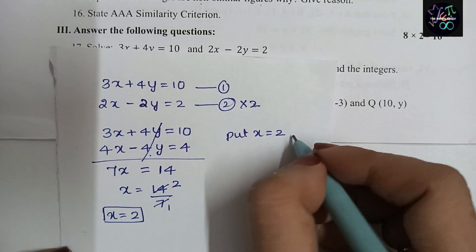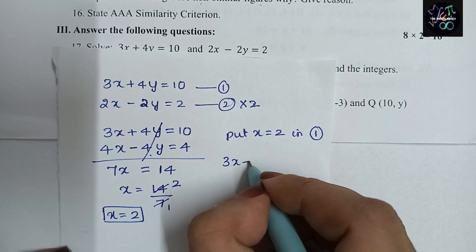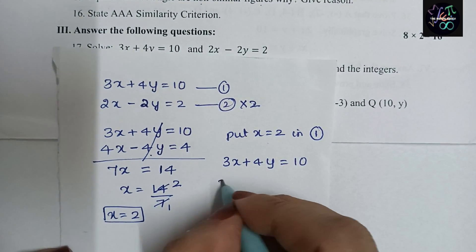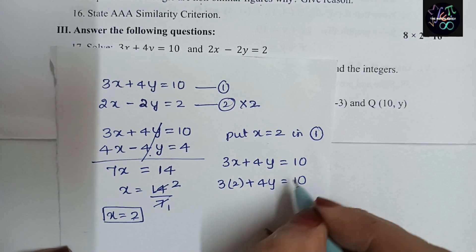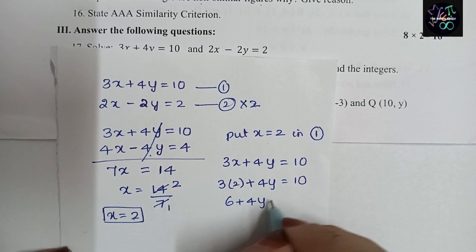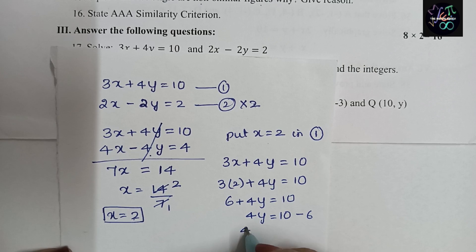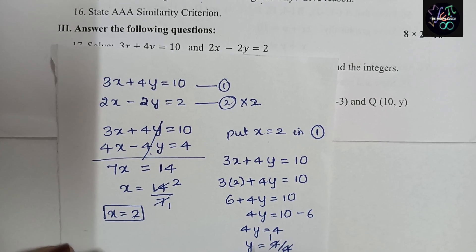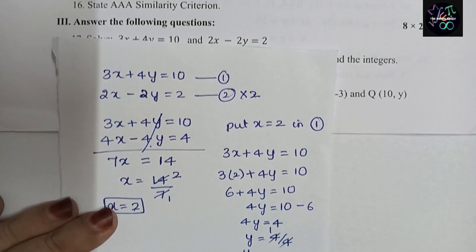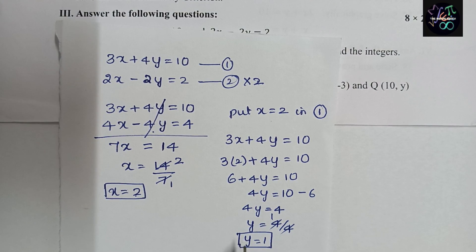I will substitute x = 2 into equation 1: 3x + 4y = 10. Putting x = 2: 3(2) + 4y = 10, so 6 + 4y = 10, then 4y = 10 − 6 = 4, and y = 4 ÷ 4 = 1. So we have found the values: x = 2 and y = 1.